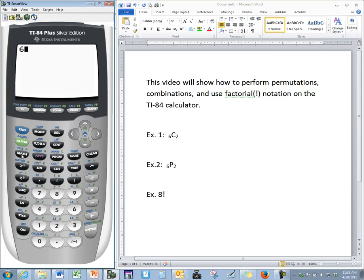Then we go to our math button and we come all the way over to the last column, PRB for probability.